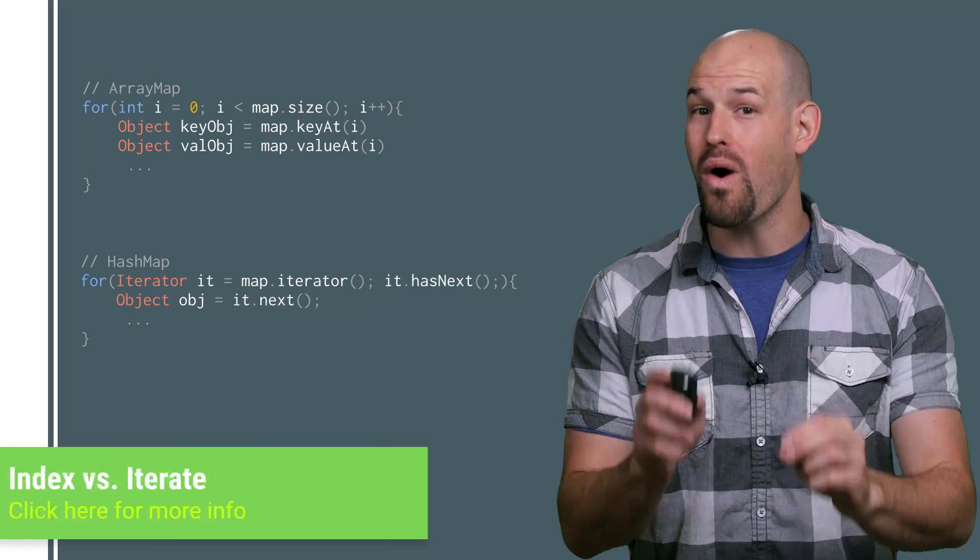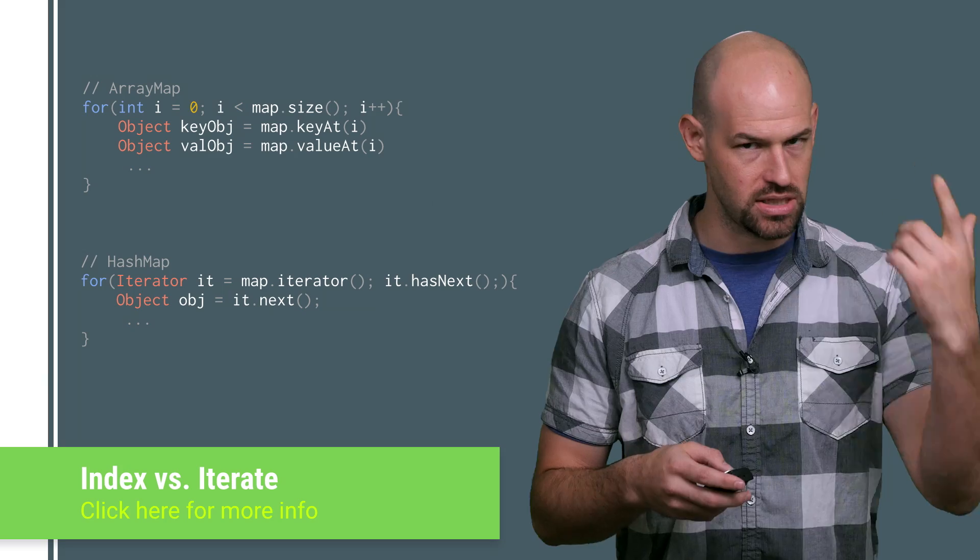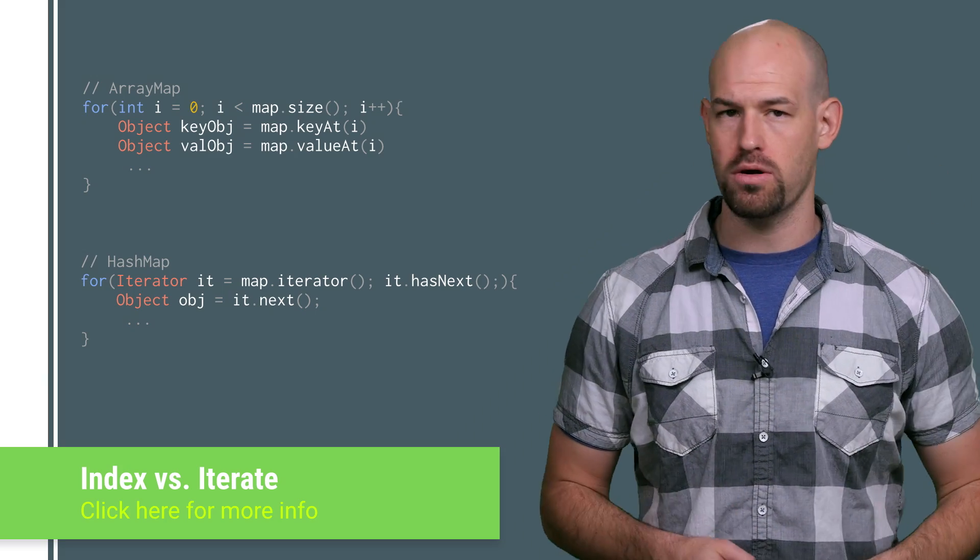And by the way, another great feature of these containers is that you can iterate over them using indexing. Compare that to the hash map container, which requires you to use the iterator pattern, which of course is significantly slower and takes up more memory to do.